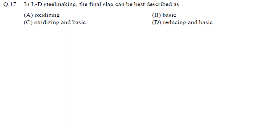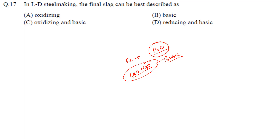In LD steelmaking, the final slag can be best described as oxidizing and basic. During LD steelmaking, some iron forms FeO. CaO and MgO in the slag make it basic. FeO also contributes to basicity, but additionally it has a greater tendency to release oxygen, making the slag oxidizing. So the slag is both oxidizing and basic.